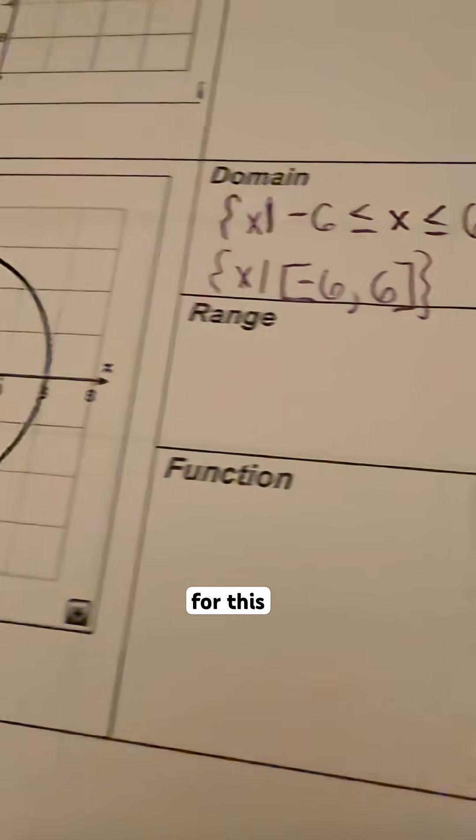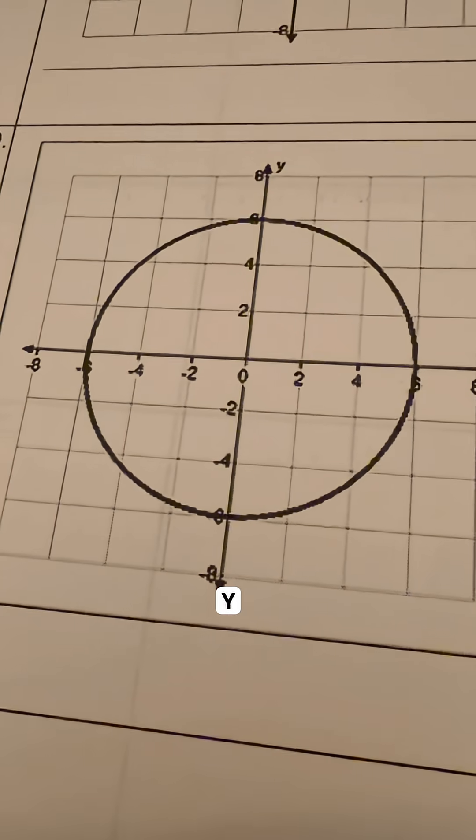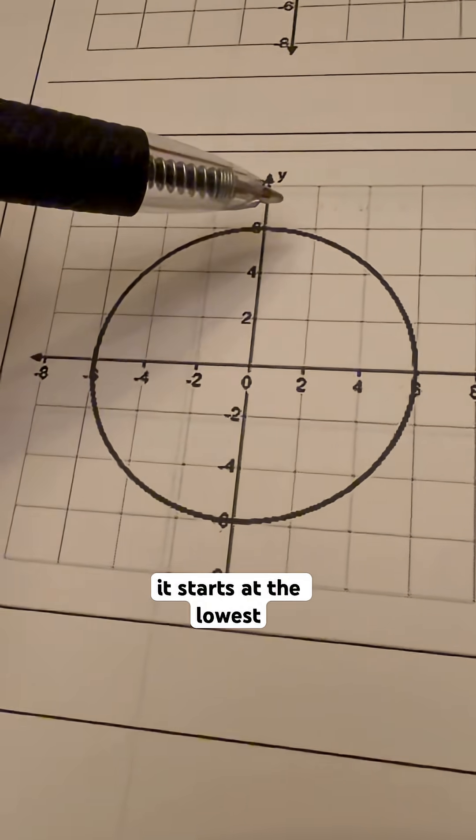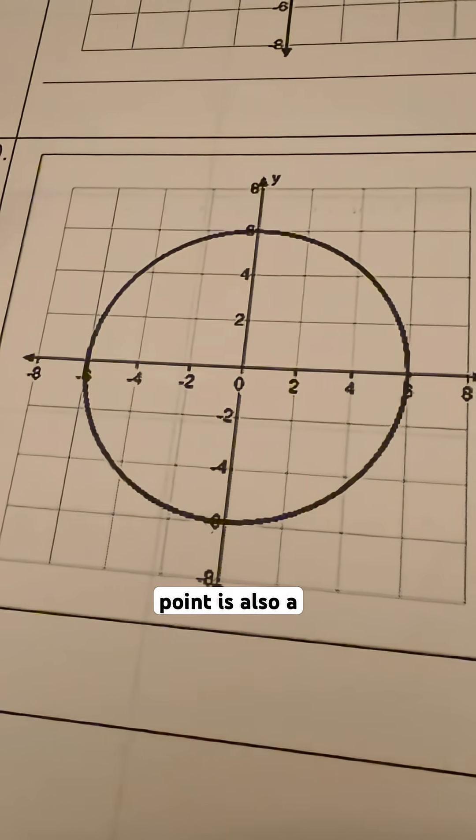Now, when we're doing the range for this, we're going to look at the y values. So again, same thing. It's a negative 6 that starts at the lowest point. Our highest point is also a positive 6.